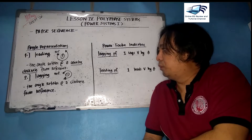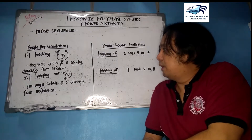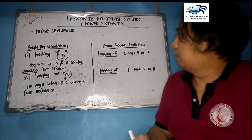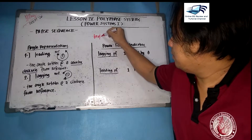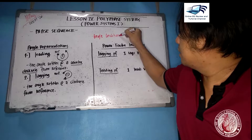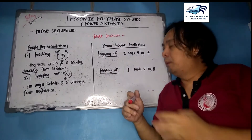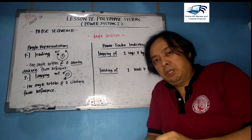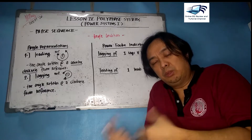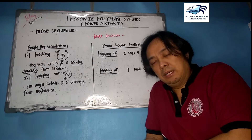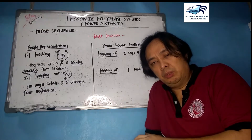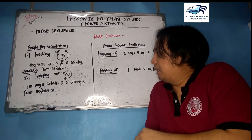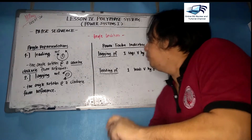Let us go to phase sequences, but before we do that we need to have some basics — some basic information on angle conditions. I call these the angle conditions of phasors because we will tackle more on this in the next few topics, specifically on phasor diagrams. We already covered this in AC circuits, but we need to recall some of them so we will be replenished on the important concepts and principles.